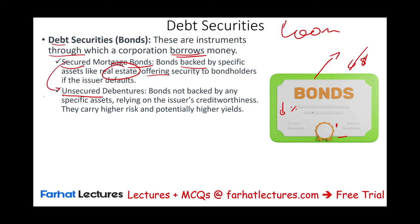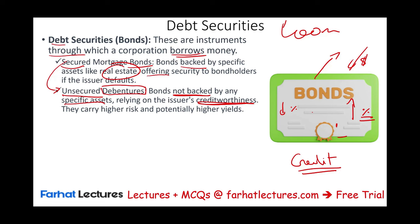Some bonds are unsecured — also called debenture bonds — meaning bonds not backed by any specific asset. Companies with excellent credit can issue these because the lenders trust them. Other companies can issue debenture bonds too, but they will have to pay a higher interest rate because they are not securing the lenders. Lenders can be secured either by your credit worthiness — meaning they trust your company, your cash flow, your product, your management — or if not, you have to pay a premium.